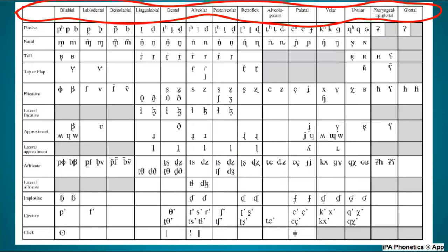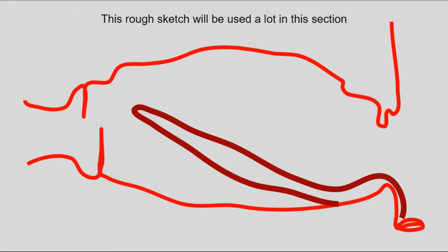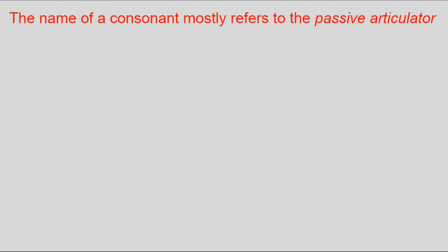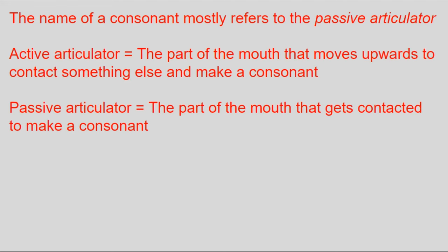The second word in a consonant's name is its place of articulation — which part of the mouth is used to make the sound. More specifically, the name mostly refers to the passive articulator. Consonants are made with two parts: the active articulator and the passive articulator. The active articulator reaches up and somehow contacts the passive articulator, which basically just stands there.